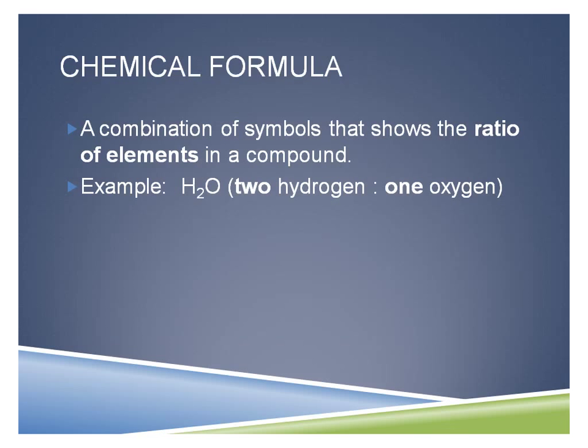A chemical formula — we've talked about this before — is a combination of those symbols, and it shows the ratio of elements in a compound. That means how many elements need to come together every single time we want to have a certain compound. For example, if I want water, I always have to have two hydrogens paired up with one oxygen — three atoms all together. If I only have one hydrogen and one oxygen, I have something completely different. So the chemical formula is like the definition of that substance.